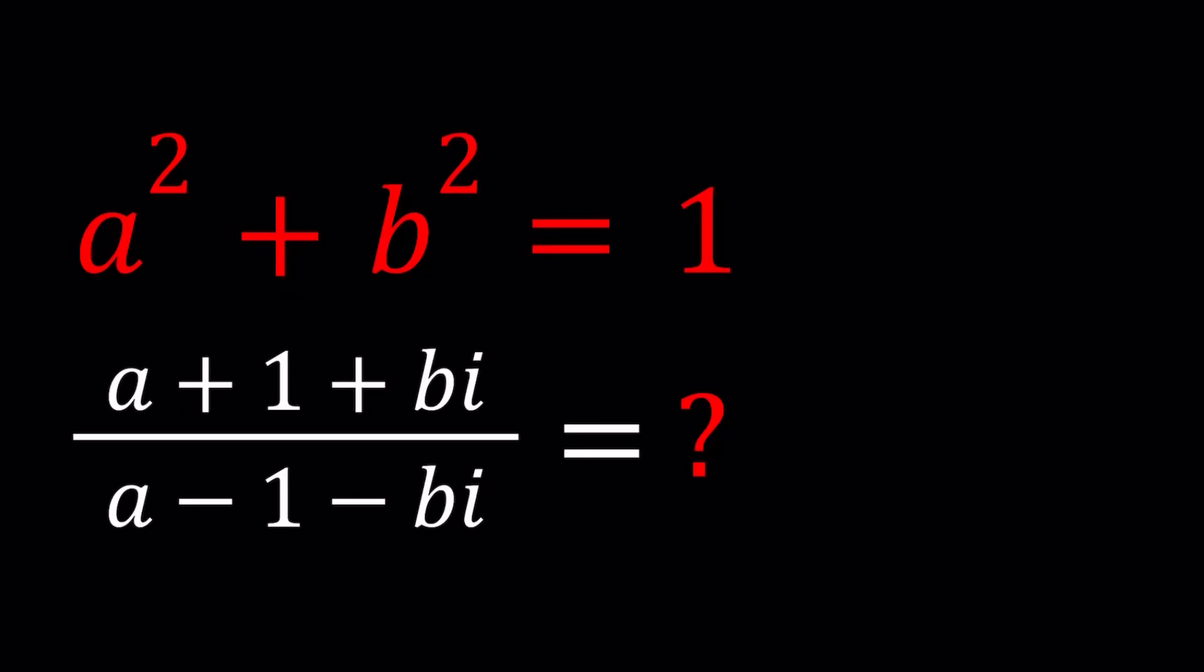Hello everyone, welcome to A plus B I. This channel is all about complex numbers and in this video we're going to be solving a homemade problem. We have this expression or equation a squared plus b squared equals 1, and then we're going to evaluate based upon the given value of a squared plus b squared. We're going to evaluate the quotient a plus 1 plus bi and a minus 1 minus bi.